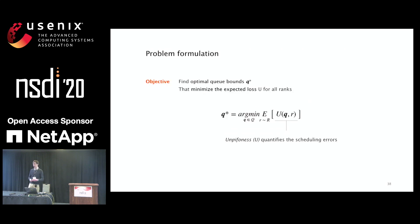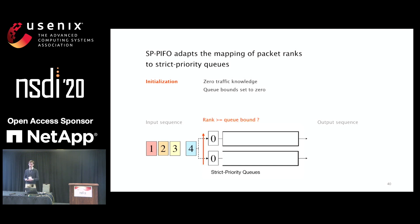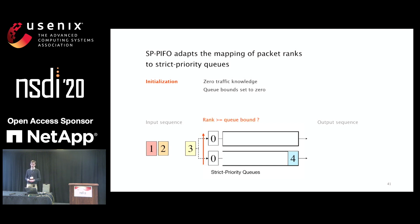To frame the problem formally: we want to find the optimal queue bound design that minimizes scheduling errors across all different ranks. SP-PIFO starts with queue bounds set to zero since we have no traffic knowledge in advance. When a packet with rank 4 arrives, it is mapped to the lower priority queue because its rank is bigger than the queue bound. If a second packet also satisfies the mapping condition for the lower queue, it too is placed there — but this will produce a scheduling error, since the rank-4 packet would be drained before a rank-3 packet.